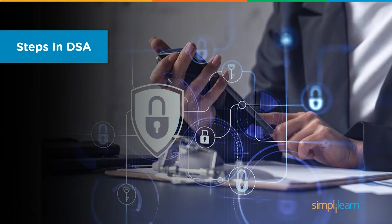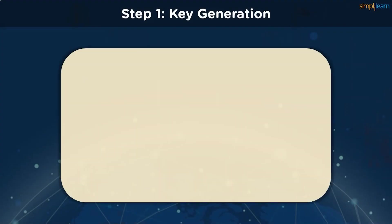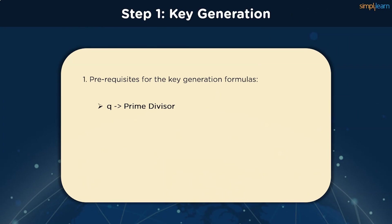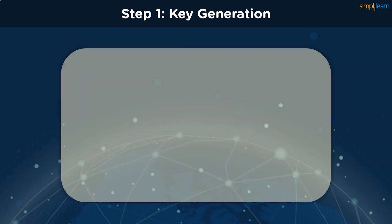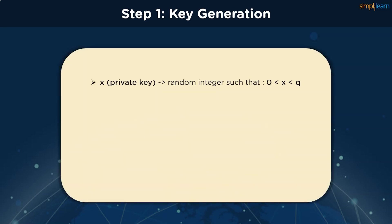We have three phases here, the first of which is key generation. To generate the keys, we need some prerequisites. We select Q, which becomes a prime divisor. We select a prime number P such that P-1 mod Q equals 0. We also select a random integer G which must satisfy two formulas shown on screen. Once these values are selected, we can go ahead with generating the keys. The private key is denoted by X and it is any random integer that falls within the specified range. The public key can be calculated as Y = G to the power X mod P, where Y stands for the public key.